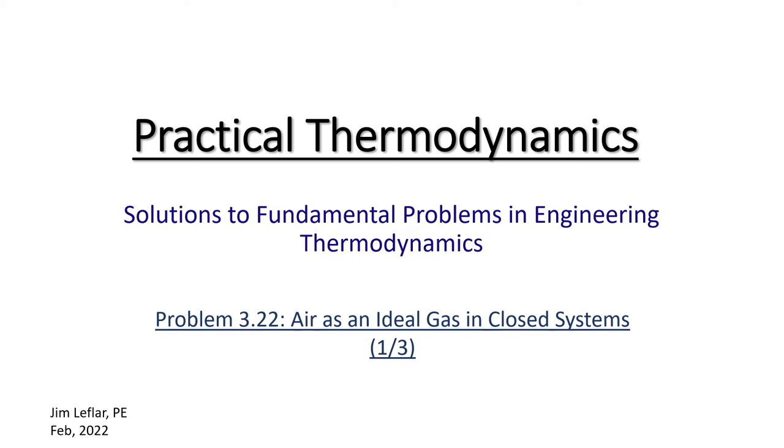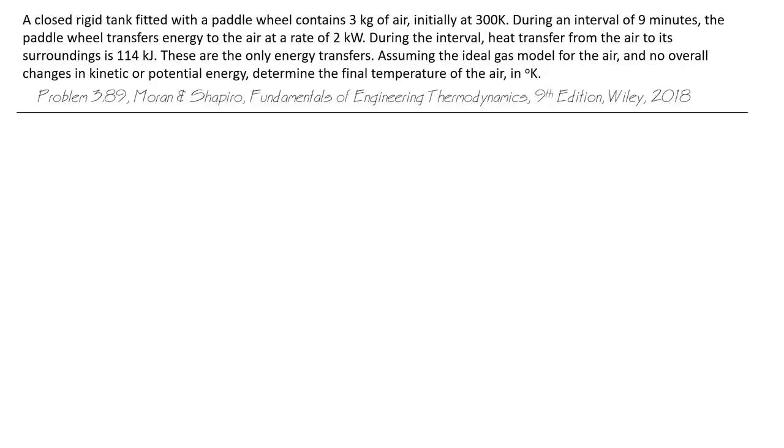Let's solve another series of problems involving air as an ideal gas in closed systems. A closed rigid tank fitted with a paddle wheel contains three kilograms of air, initially at 300 degrees Kelvin. During an interval of nine minutes, the paddle wheel transfers energy to the air at a rate of two kilowatts. During the interval, heat transfer from the air to its surroundings is 114 kilojoules. These are the only energy transfers. Assuming the ideal gas model for the air and no overall changes in kinetic or potential energy, determine the final temperature of the air in degrees Kelvin.